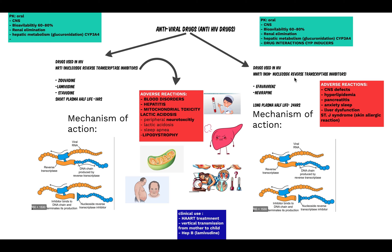Now let's move on to NNRTIs. The two examples here are efavirenz and nevirapine. They have a longer plasma half-life of 24 hours, so they only need to be administered once. The mechanism of action is similar — they block the reverse transcriptase enzyme — but this time they non-allosterically bind to it, so it's a non-competitive mechanism. The key difference between NNRTIs and NRTIs is that NNRTIs are non-competitive blockers and NRTIs are competitive blockers.